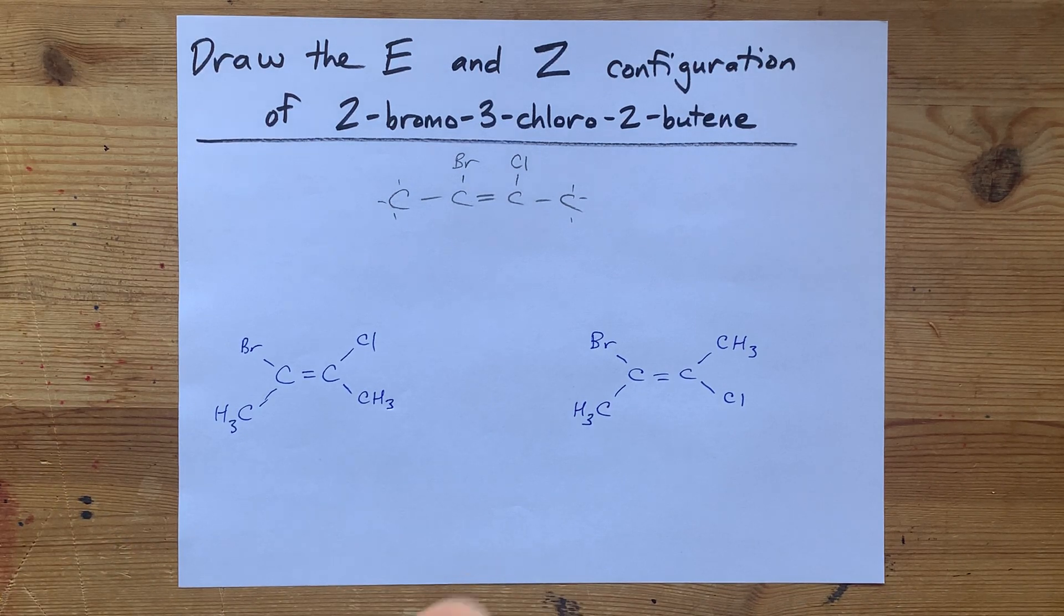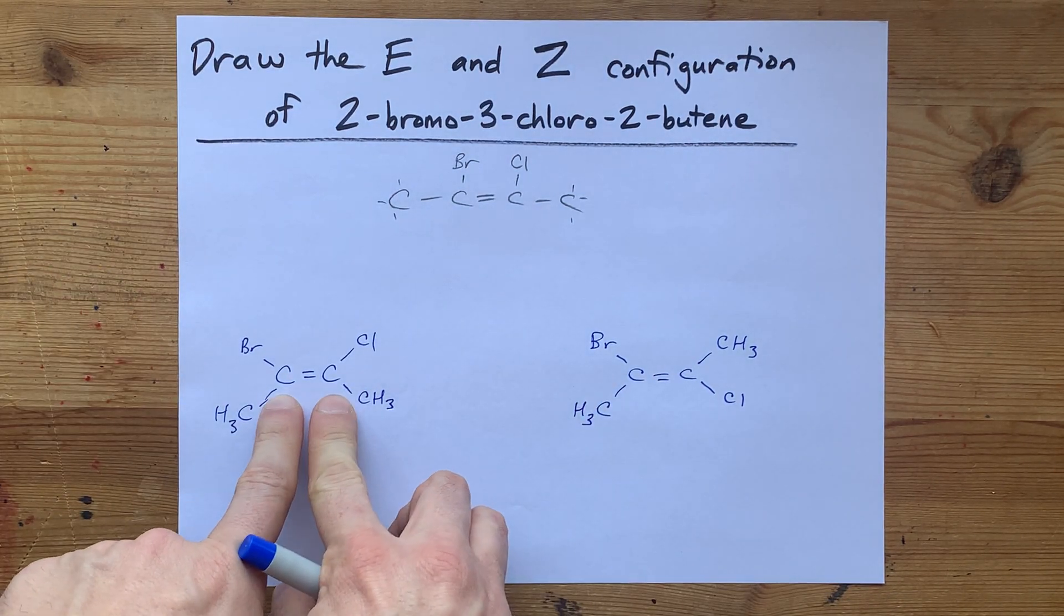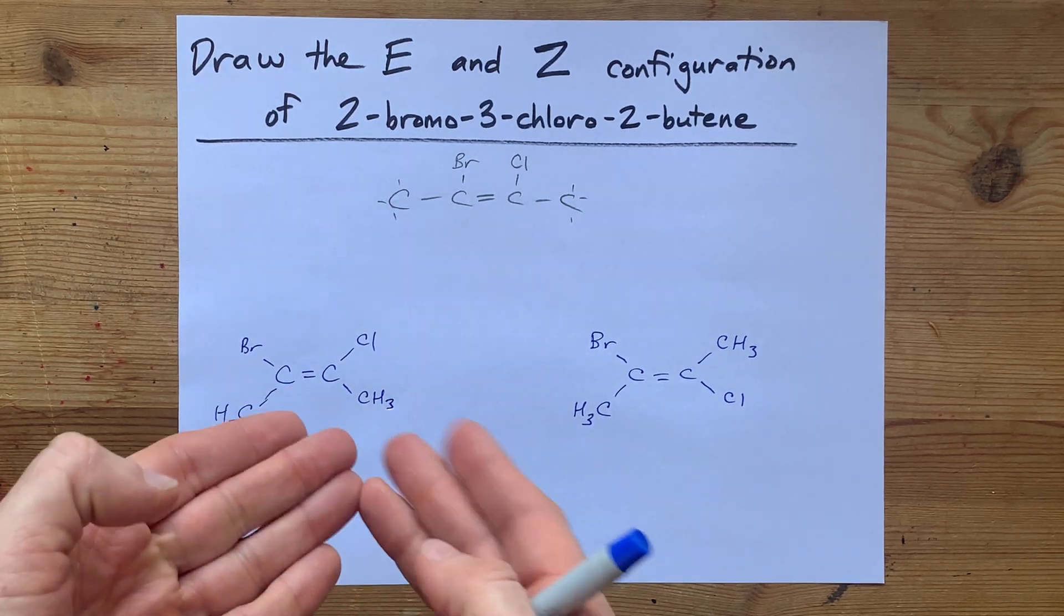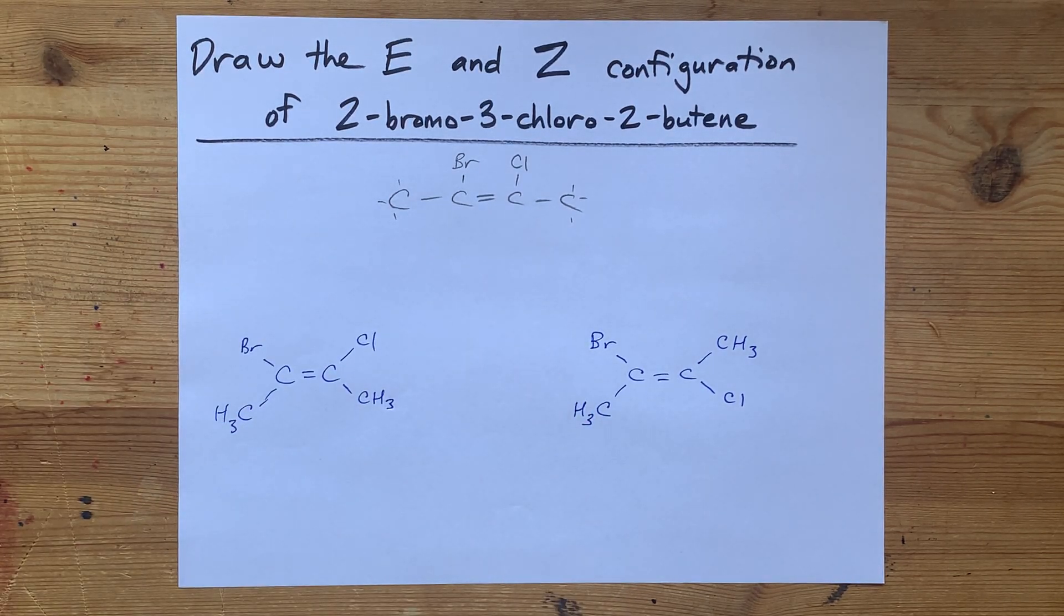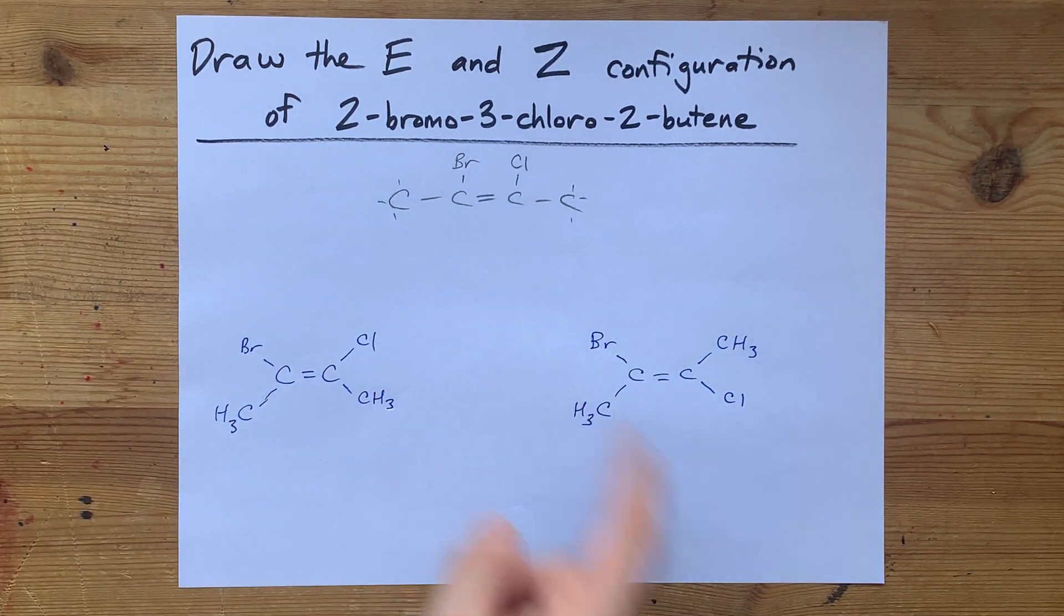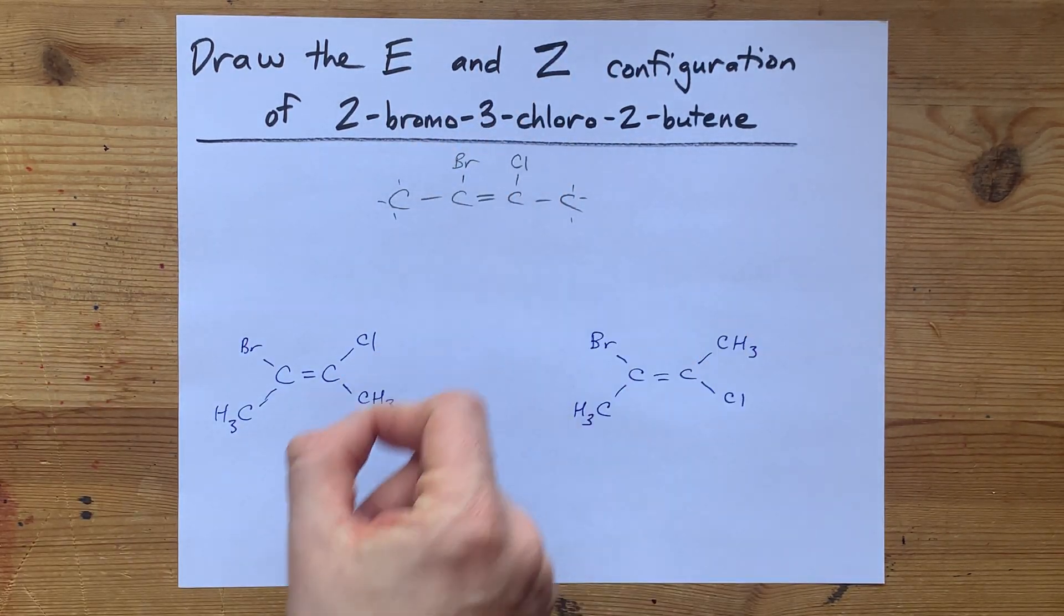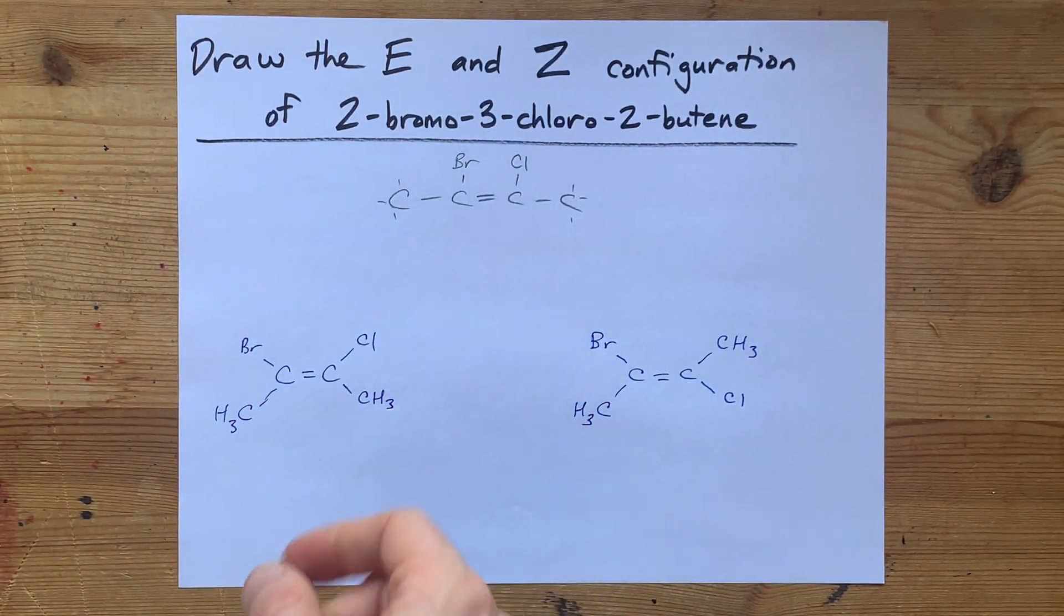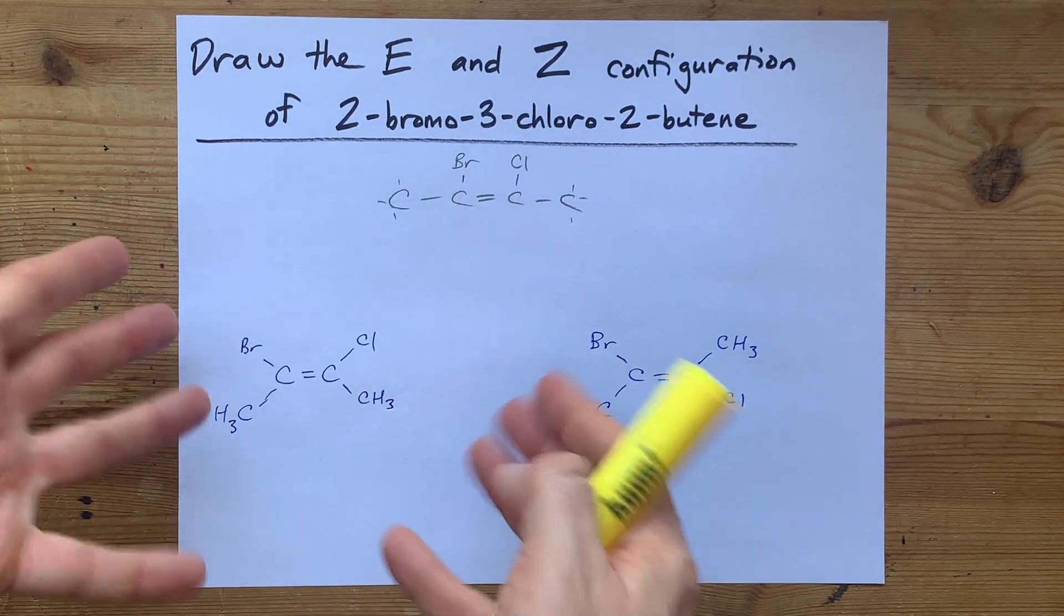In fact, you might, off the top of your head, recognize this as a cis isomer because you have two CH3 groups which are identical on the same side of the axis of the double bond. And here, CH3s are on opposite sides. But you're here for E and Z. E and Z designations require Cahn-Ingold-Prelog priority naming or priority groups.